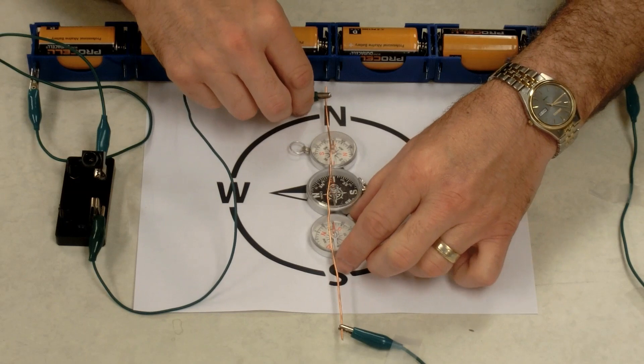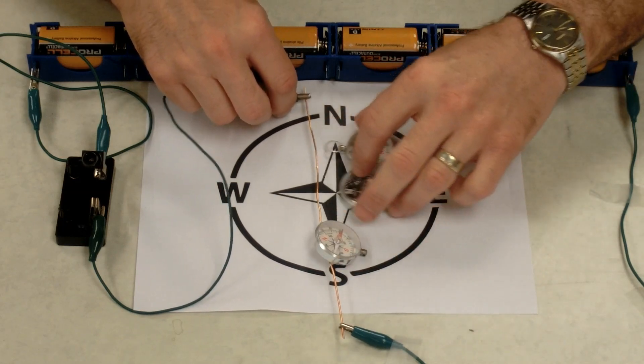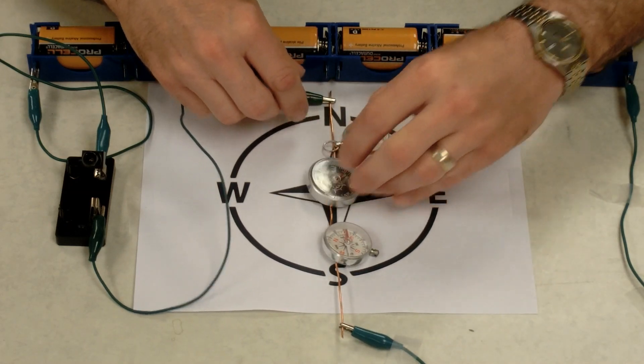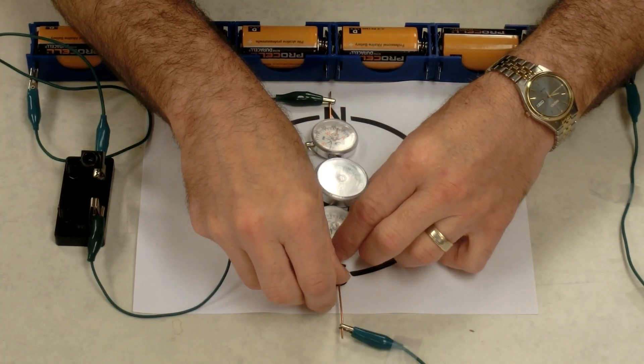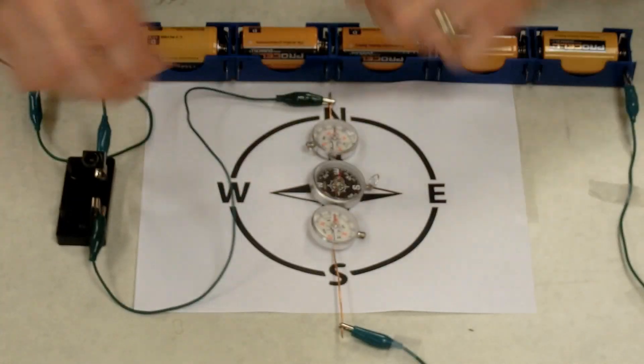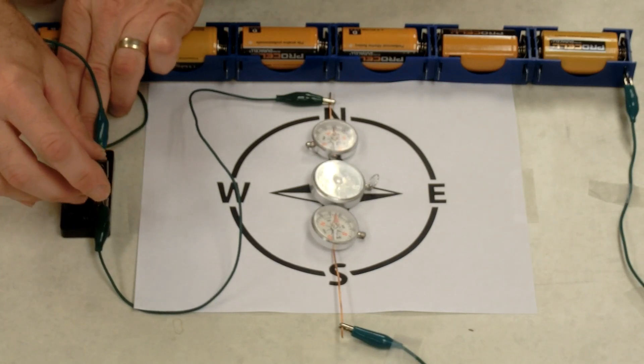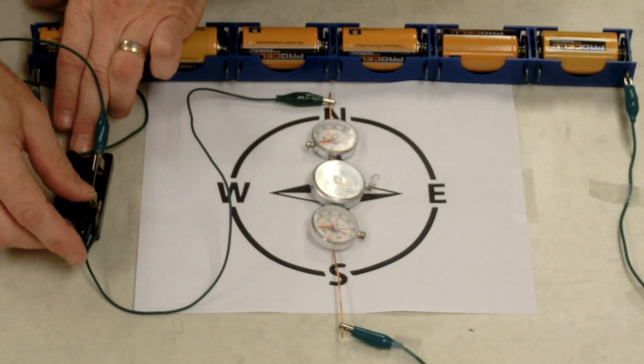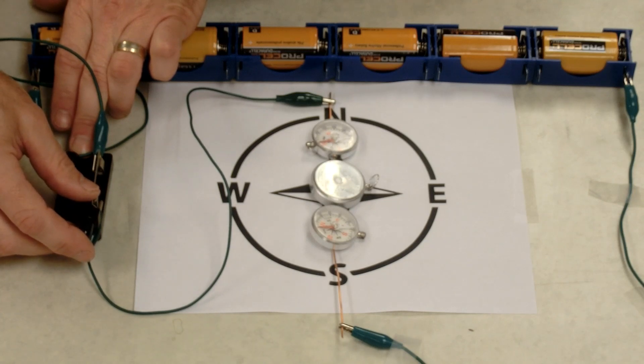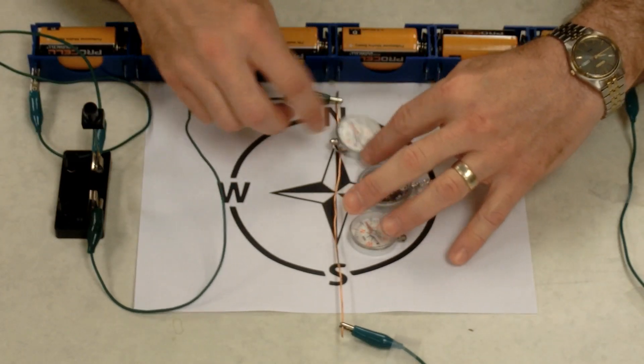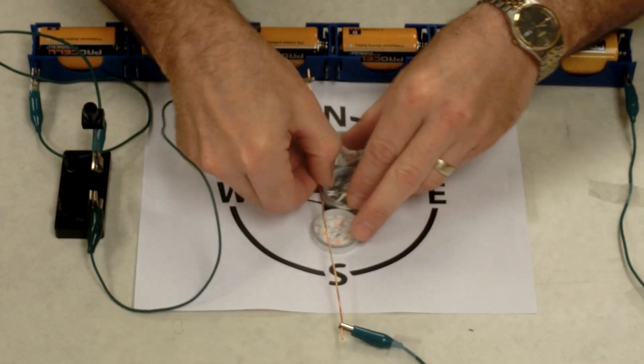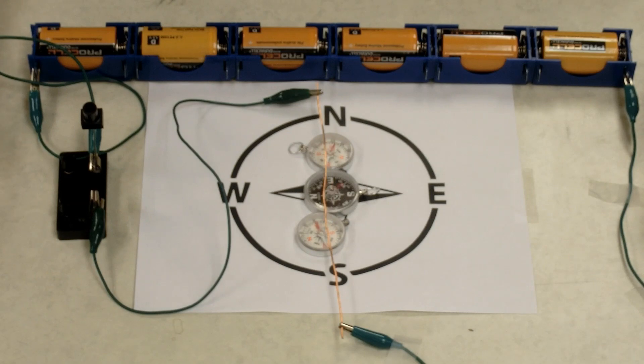Now, if we place the compasses above the wire instead of below, and we close the switch and run current through the wire, notice what happens. This time the compass needles deflected to the west. So the magnetic field above the wire faces one direction, and the magnetic field below the wire faces the other.